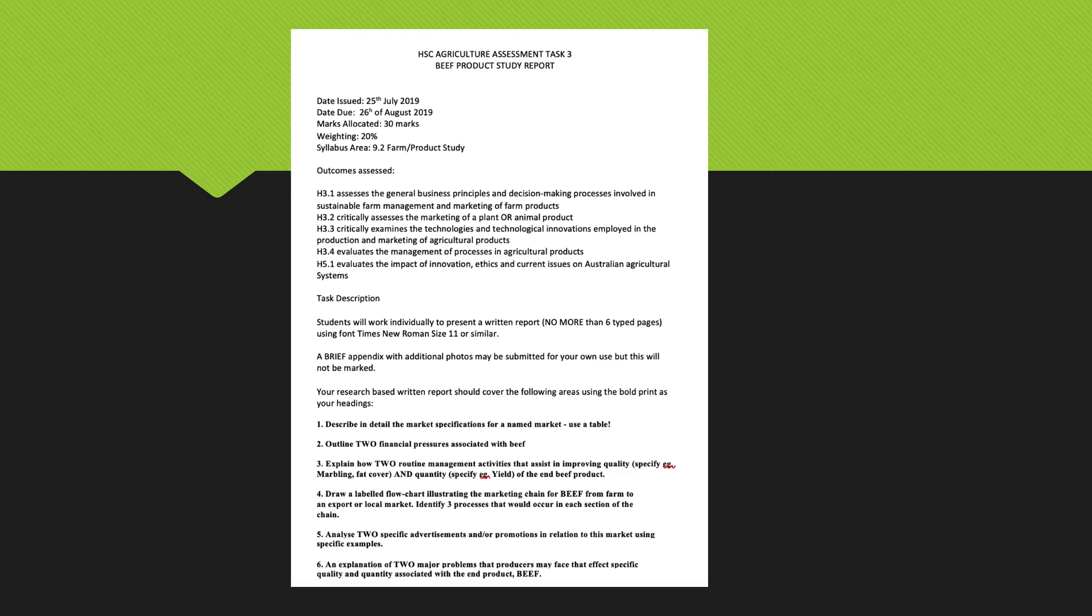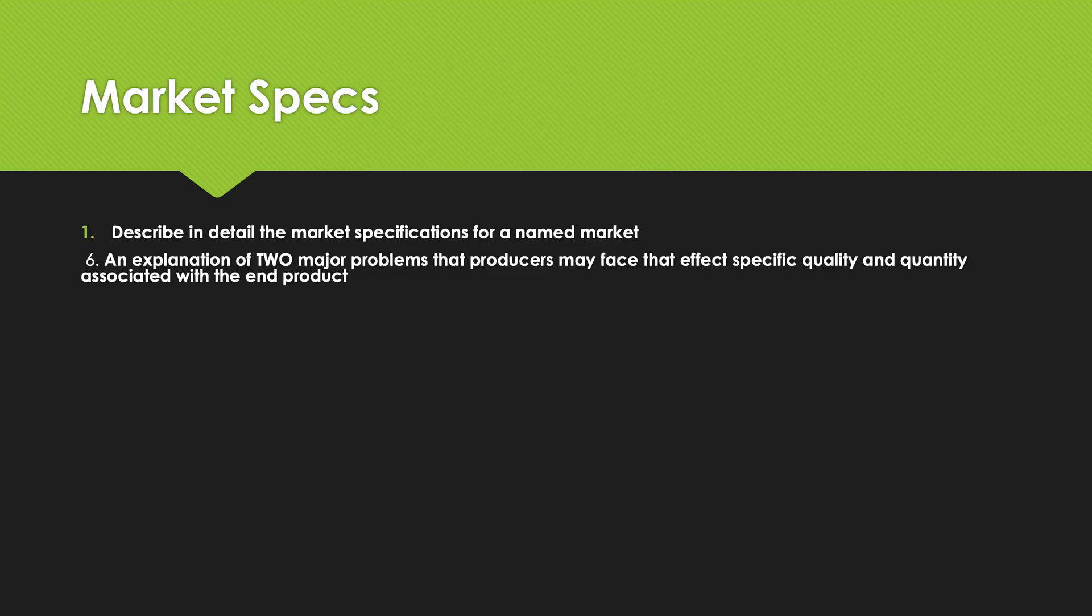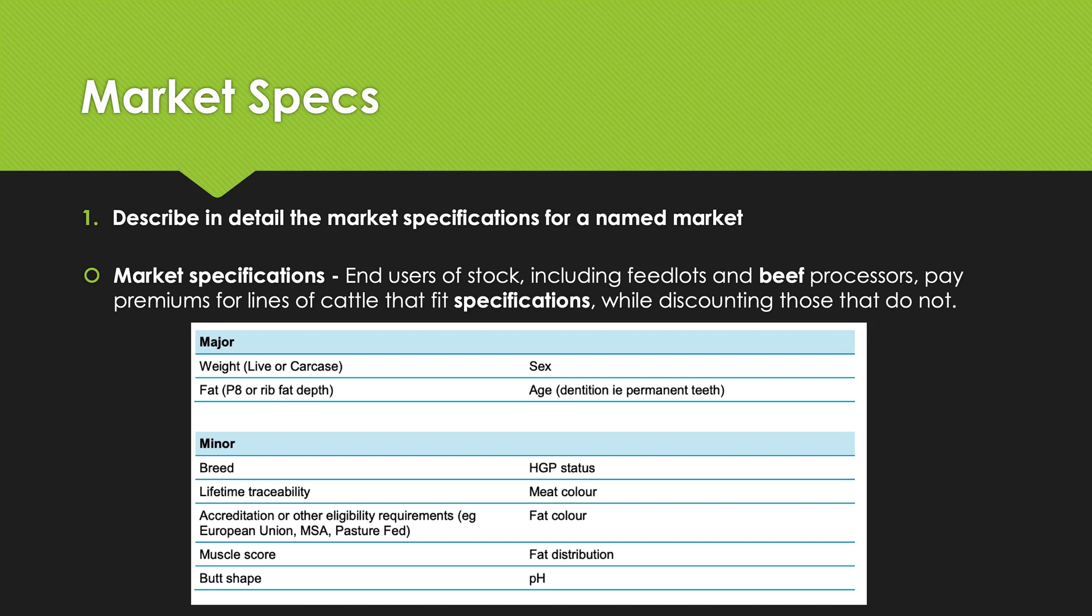You'll be familiar with this because we looked at our assessment task last term. We looked at all of the specific questions I asked you, looking at beef as your product study. So I'm going to revisit some of these questions and maybe put them together, not quite in the order that we looked at in the assessment task, but it makes sense to me hopefully when I'm delivering it to you. The first question I asked you was to describe in detail the market specifications for a named product. And something that actually later on was give an explanation of two major problems that producers may face that affect specific quality and quantity associated with the end product, which is in our case beef. So let's deal with the first question: market specs first. So what are market specifications?